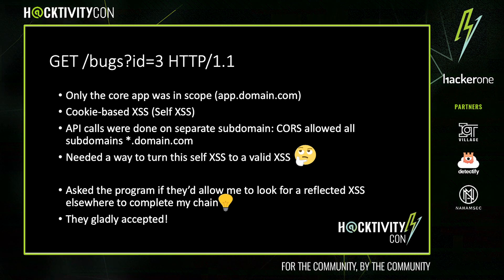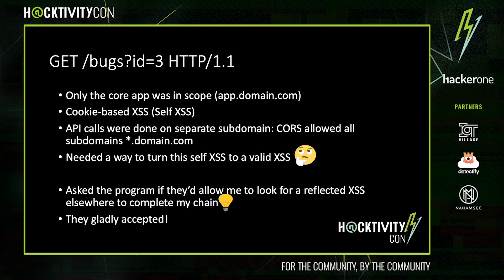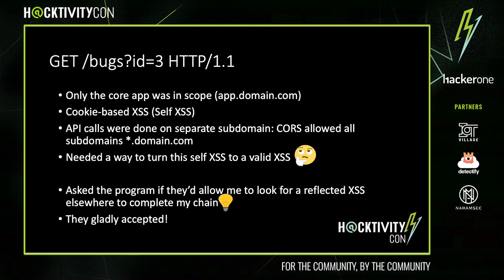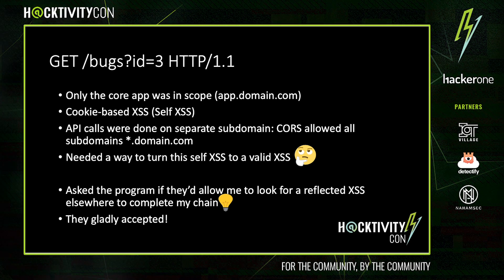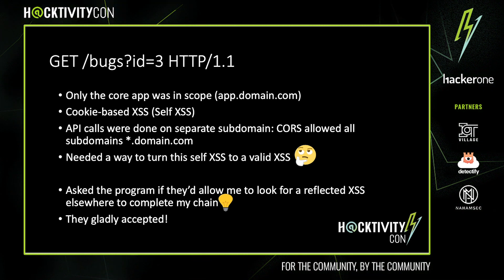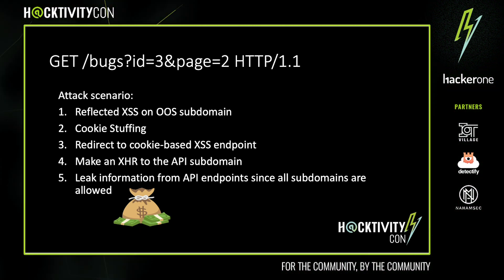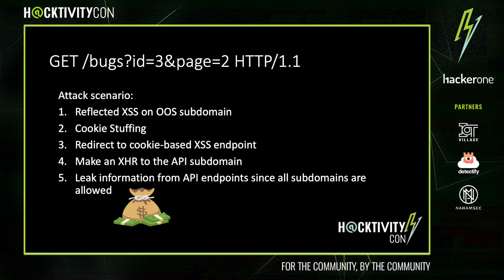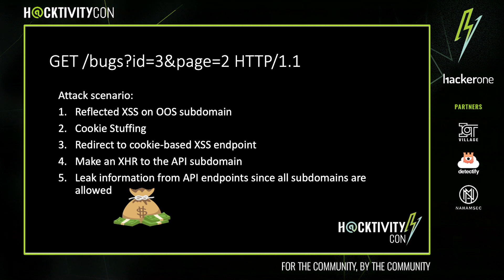Here's the attack: with the reflected XSS on an in-scope domain, I redirected the user to the vulnerable endpoint where the cookie-based XSS was located. I used cookie stuffing to set my malicious cookie containing my XSS payload to exploit the CORS misconfiguration. As per the HTTP state management mechanism RFC, cookies with the longer path are listed before the ones with the shorter path. Luckily, the cookie set by the server didn't have a path, so I could set anything as a path — my cookie would be the one reflected on the webpage. Shoutout to Phil Descriptor for this trick, learned at H1-514 two years ago. With my cookie-based XSS, I was able to make an XMLHttpRequest to the API host and leak PII data. The lesson here: if you need a bug on an out-of-scope asset to complete your chain, always ask permission first.